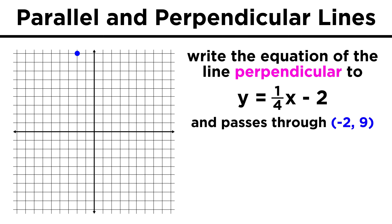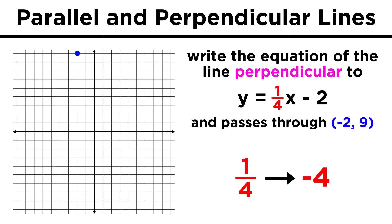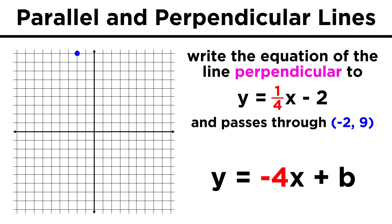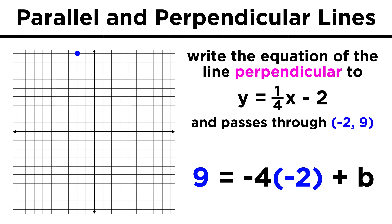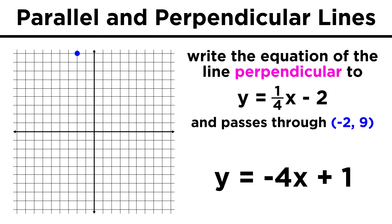We could do the same thing for perpendicular lines. Say we need to find the equation for the line that is perpendicular to y equals one-fourth x minus two and passes through the point (-2, 9). We know we need the opposite reciprocal of the slope, so one-fourth becomes negative four. Y equals negative four x plus b. We plug in the coordinates of the point we have, and nine equals negative four times negative two plus b. This product is eight, we subtract eight from both sides, and b equals one, so the equation is y equals negative four x plus one.